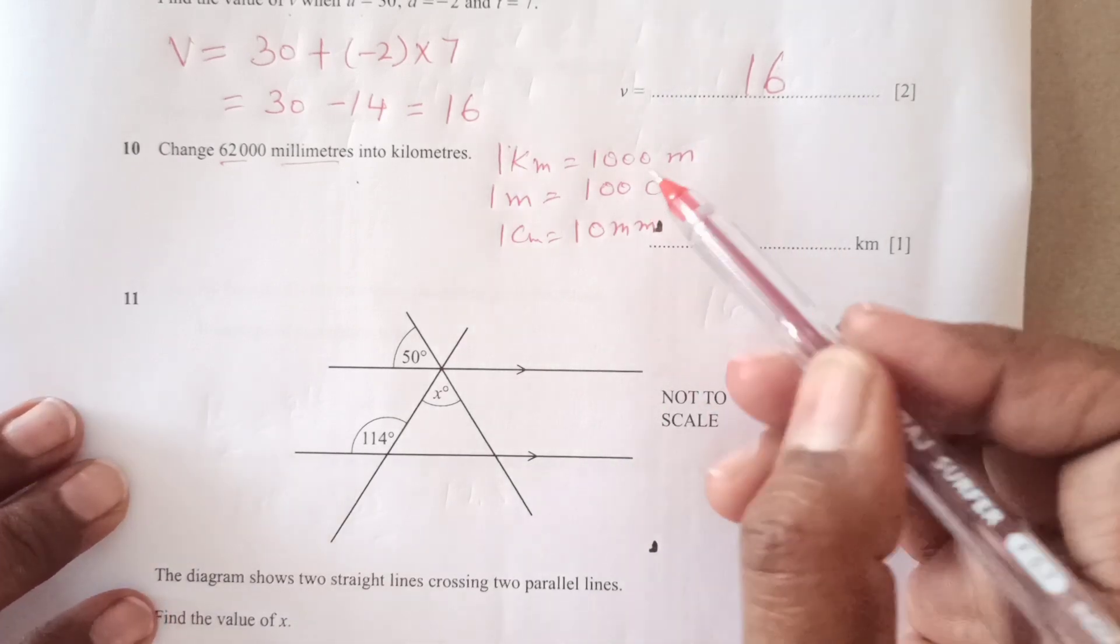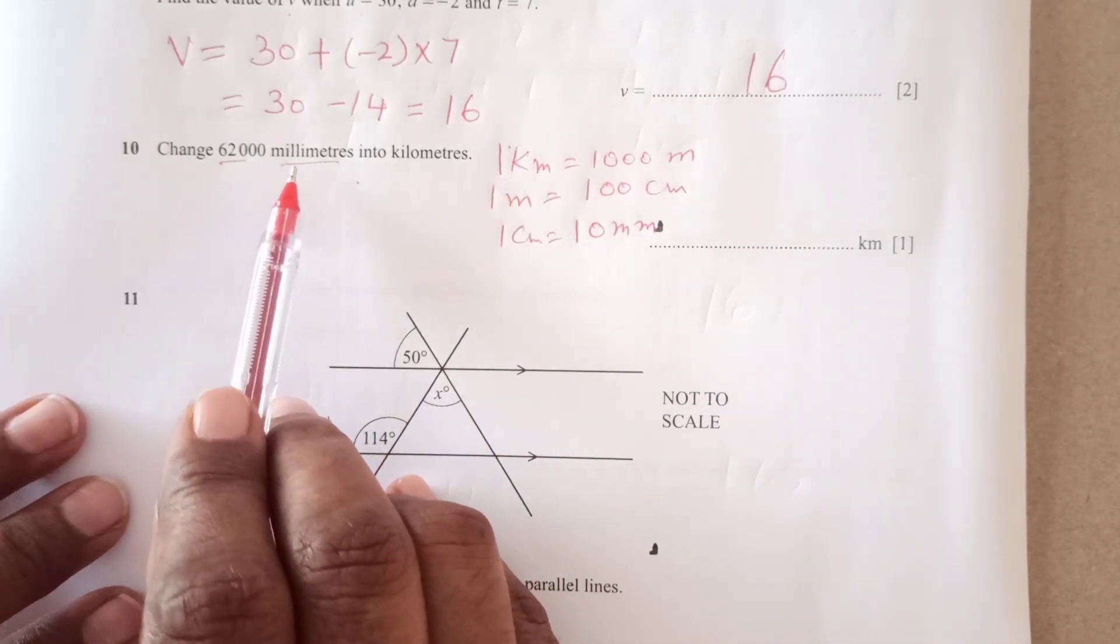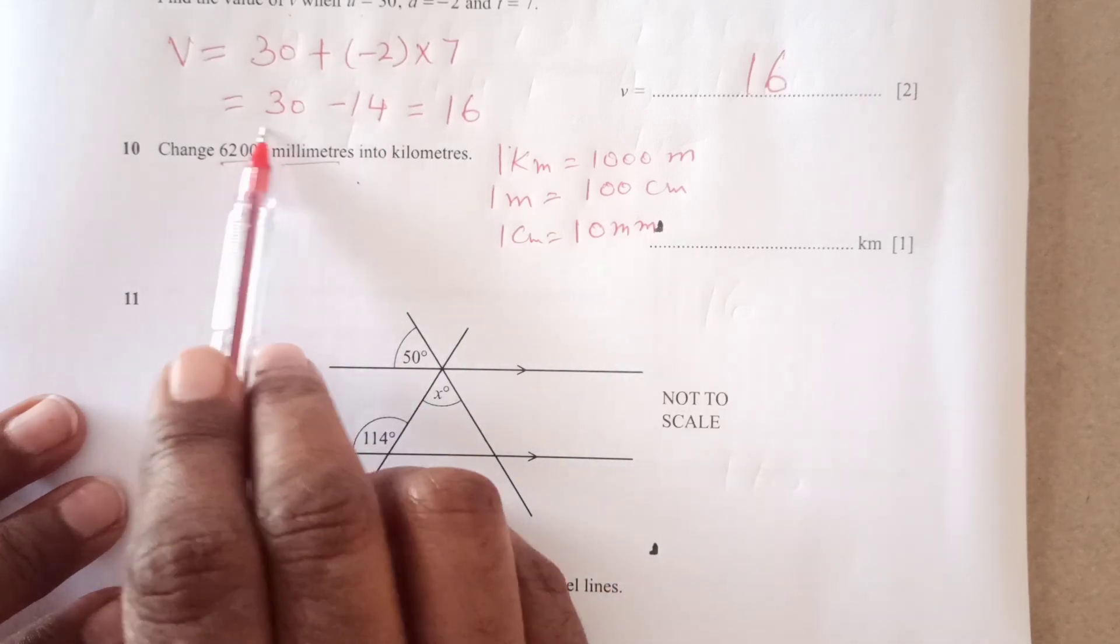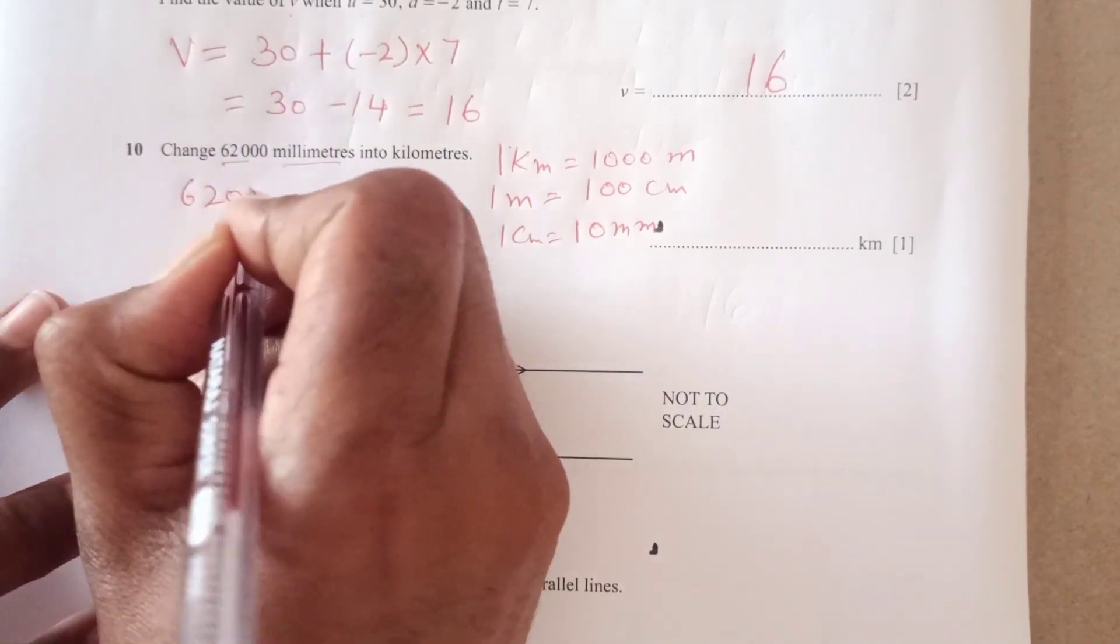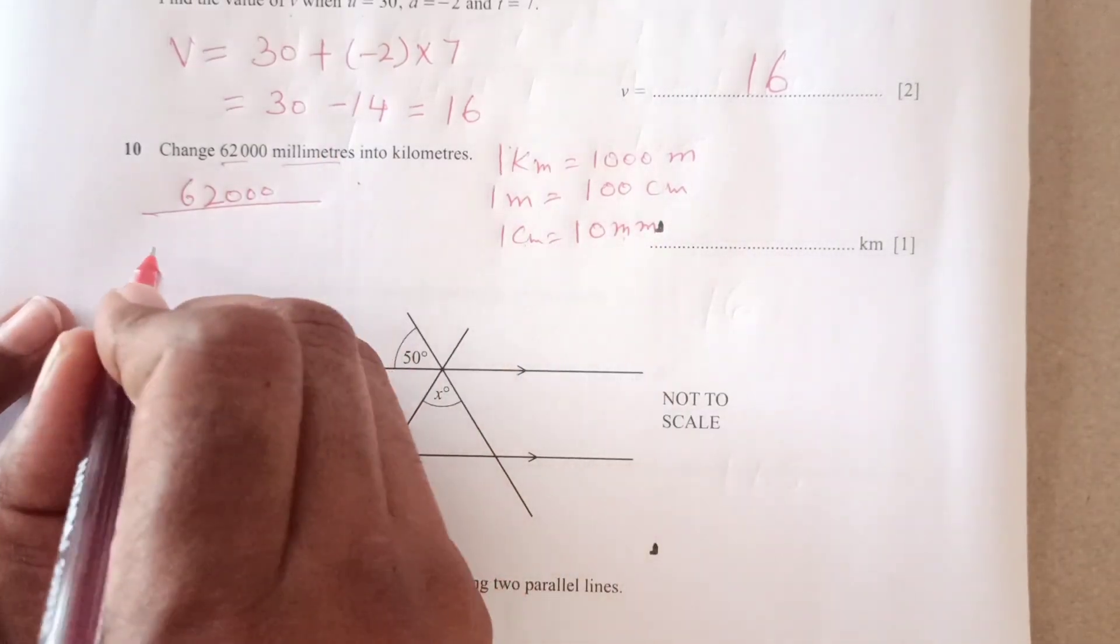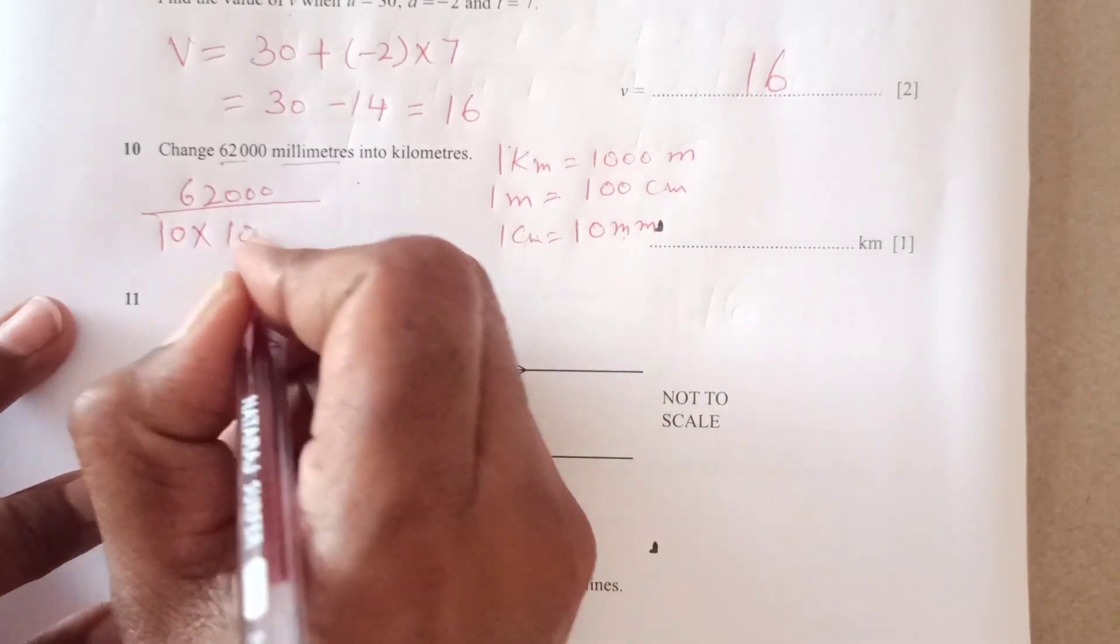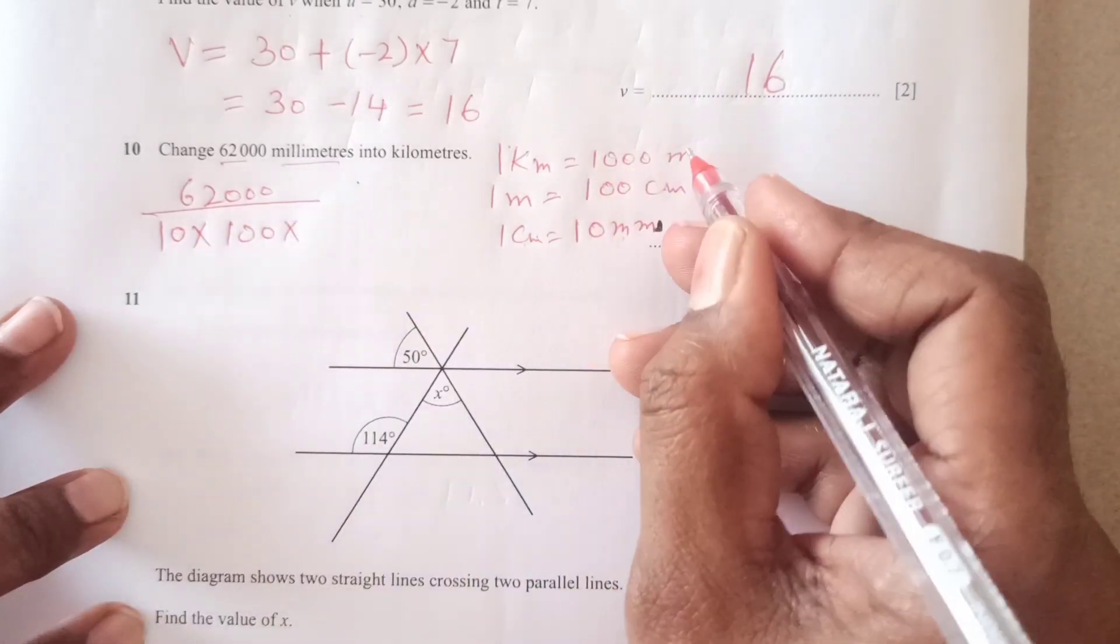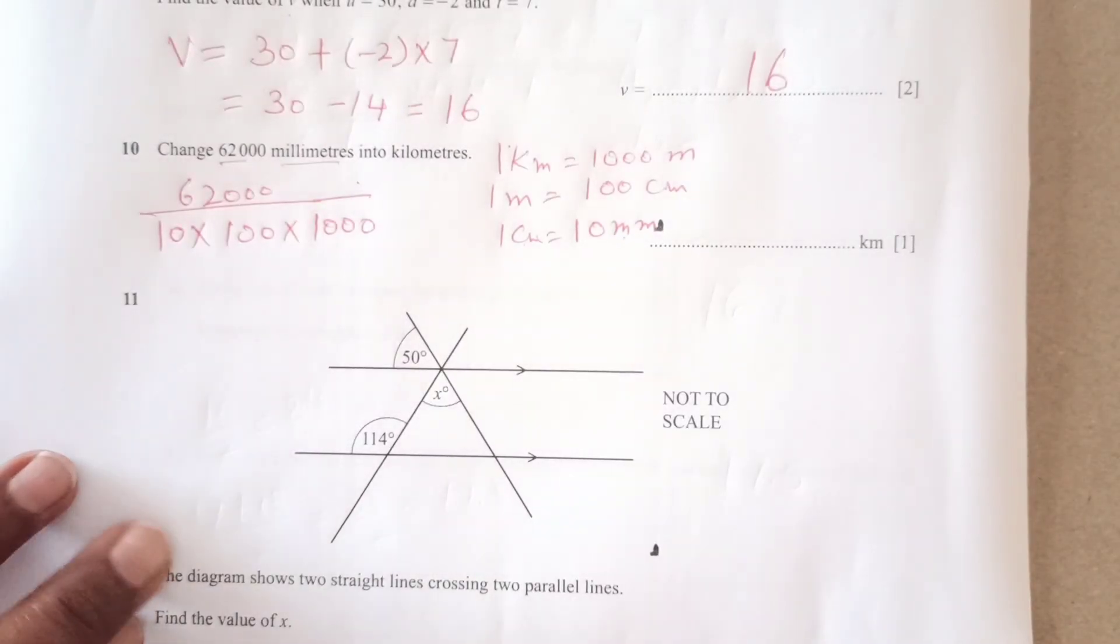And 1 meter is equal to 100 centimeters. And 1 centimeter is equal to 10 millimeters. So we are going to use this one. So as we are changing from lower to the bigger one, so this number is going to decrease. So 62,000, we are going to divide millimeter to first millimeter to centimeter that is 10. Then centimeter to meters divide by 100. Then from centimeter to kilometers, divide by 1000.